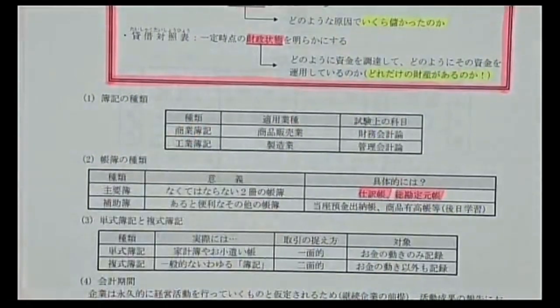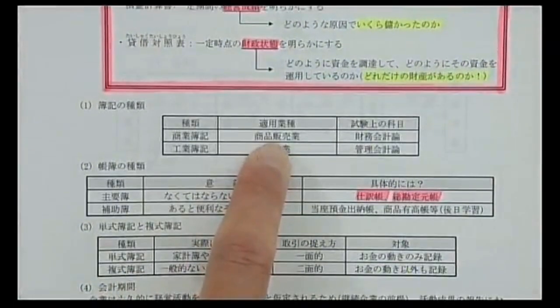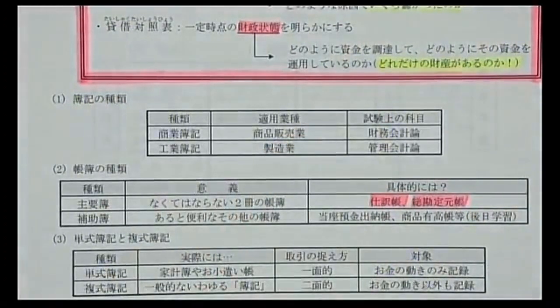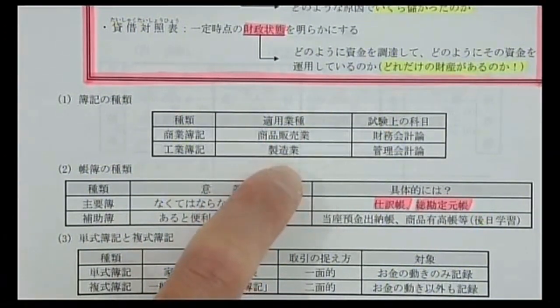簿記の種類として商業簿記と工業簿記があります。今から勉強する財務会計論は商業簿記にあたります。商業に適用する簿記で、スーパーやコンビニがイメージです。工業簿記は管理会計論に相当し、製造業のメーカーに適用します。自動車工場やパン工場などを持つ会社が対象です。